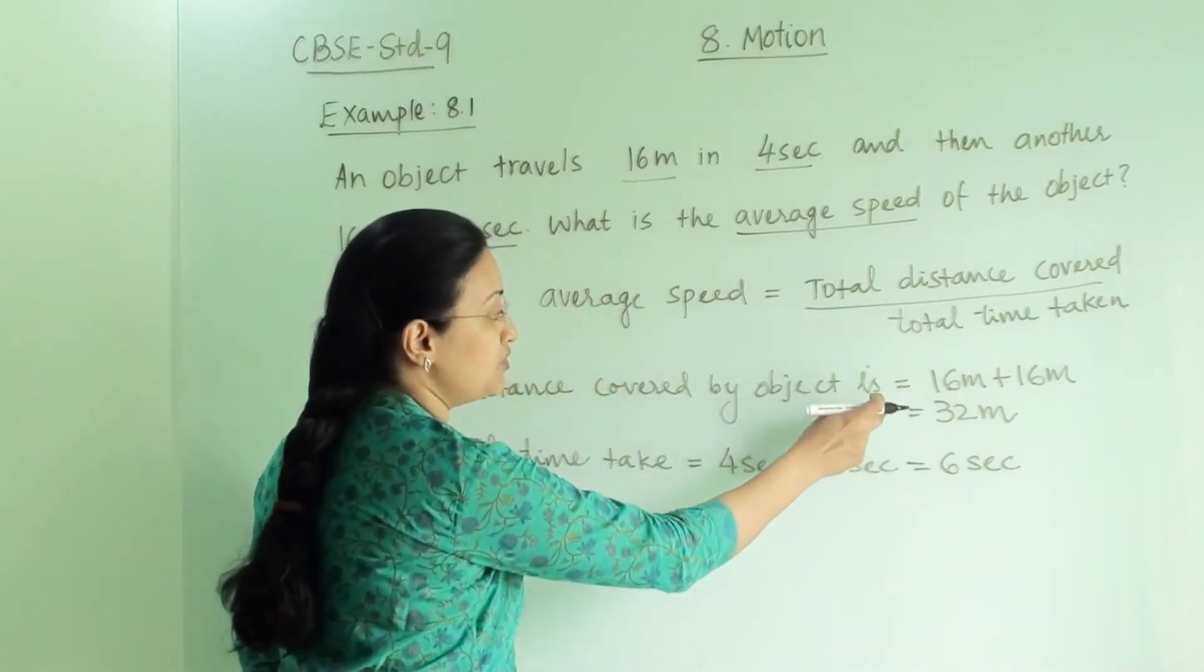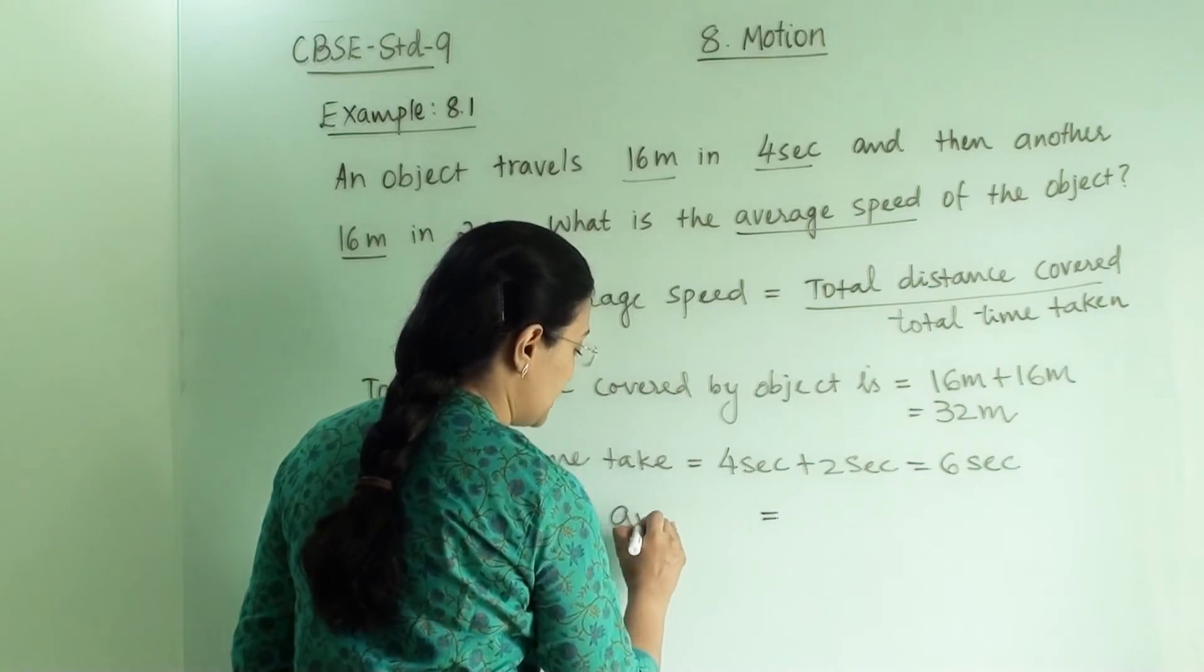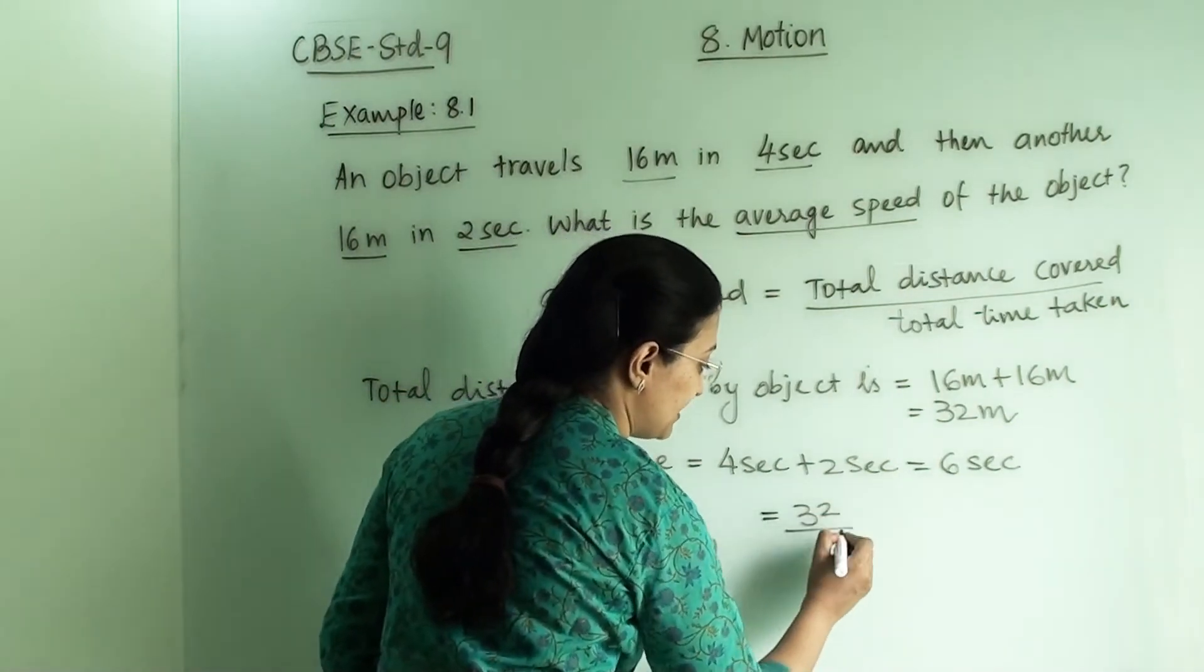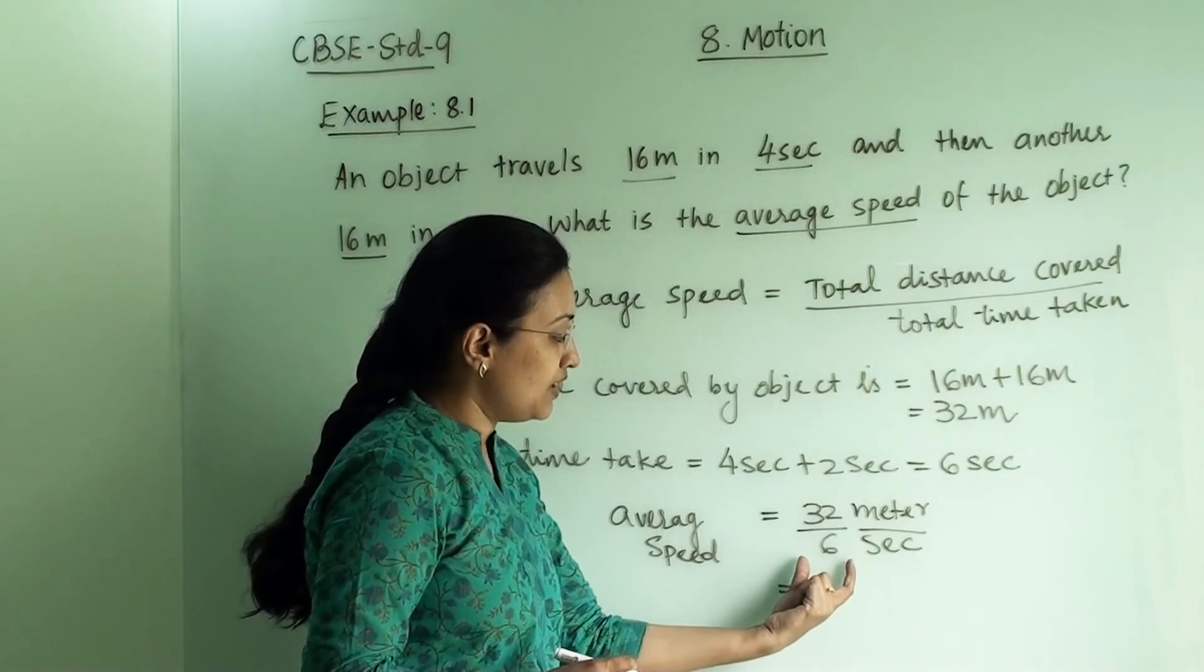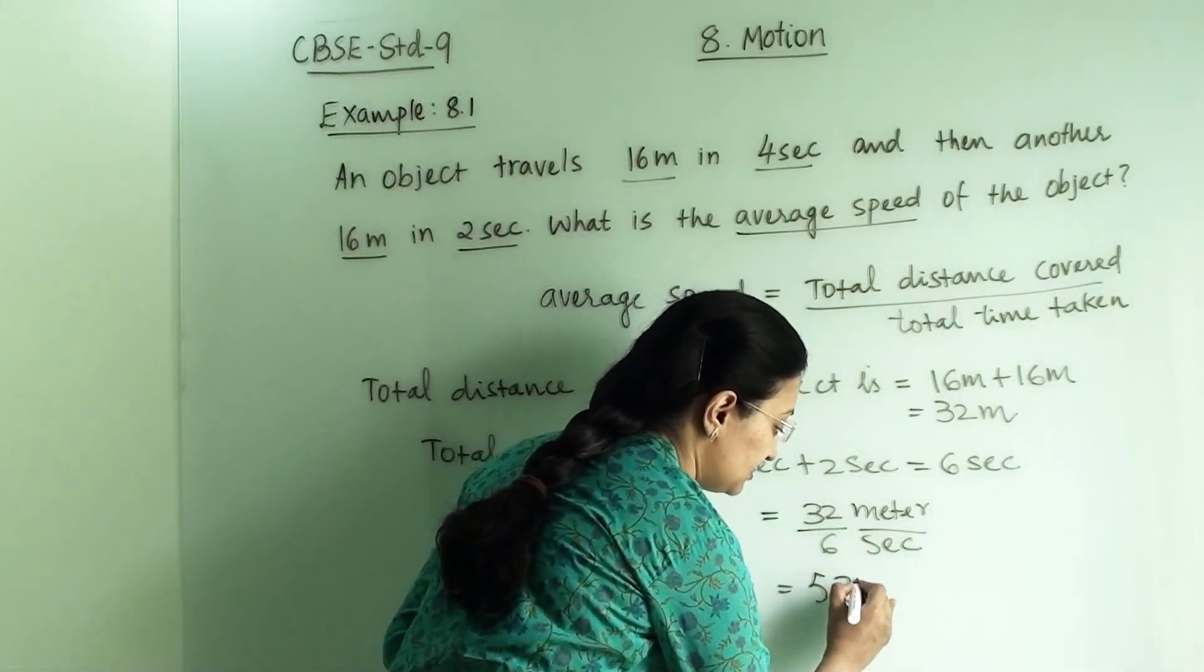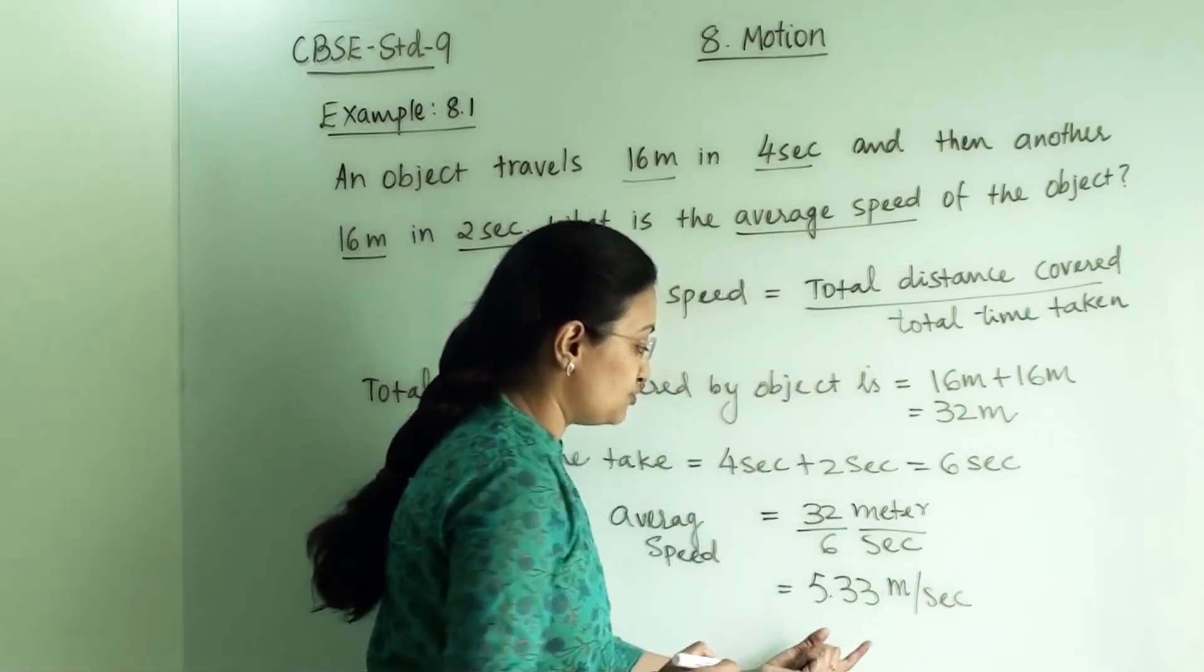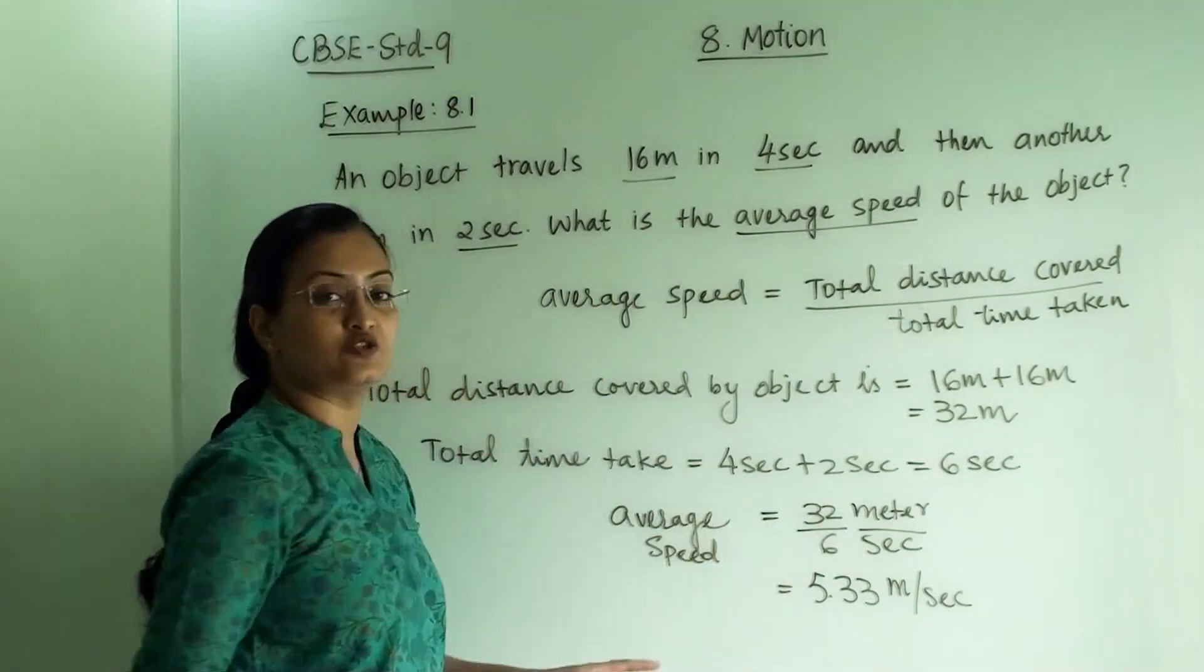So let us now put these two values in this equation. So here average speed again equals to 32 divided by 6. Now let us divide 32 and 6. So we will get here 5.33 as an answer and the unit will be meter per second. So this is our final answer for average speed.